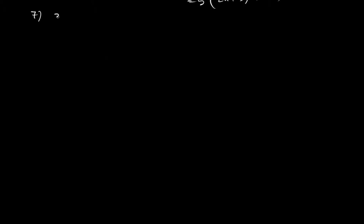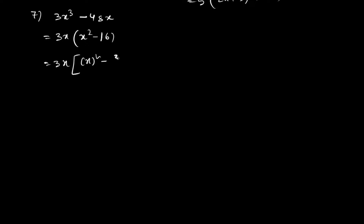You can always pause the video, but try to understand the method rather than just copying. For question 7, we take 3x common, leaving x² - 16, which we convert to x² - 4². Applying the formula gives the answer: 3x(x + 4)(x - 4).